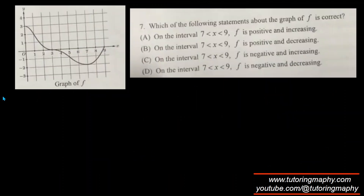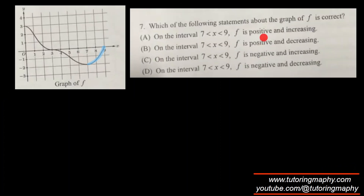Moving on to questions. We're given a curve and asked which statement about graph f is correct between x = 7 and x = 9. Is the function positive or negative? The function is negative because it's below the x-axis. Is the function increasing or decreasing? It's increasing — y is climbing with increasing x. So the answer is negative and increasing, which is option D.